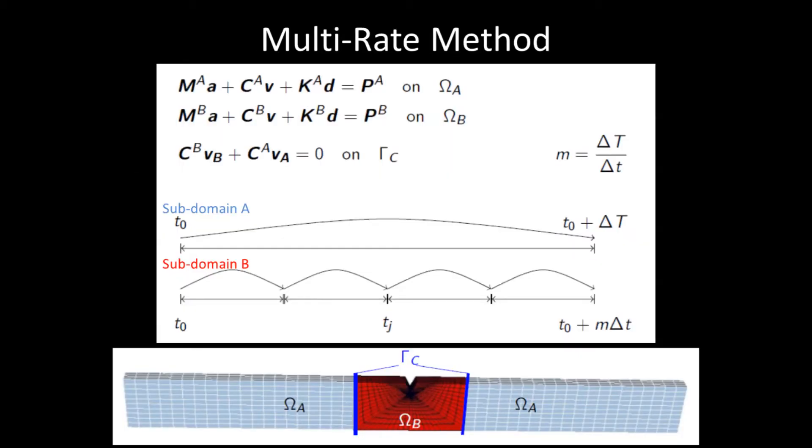To do multi-time stepping formally, we split the problem into subdomains. In this example, subdomain A is solved at a large time step, and subdomain B is solved at a small time step. Coupling terms along the internal boundary C maintain consistency between the two subdomains, and conserve energy in the simulation. The two timelines show the layout of the multi-time stepping method.